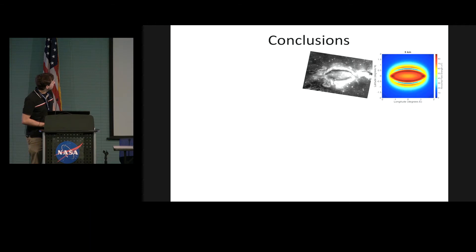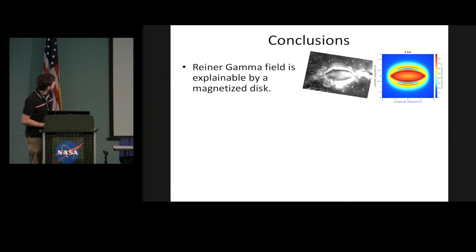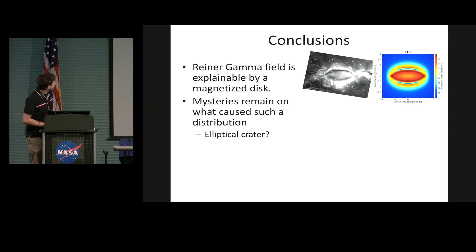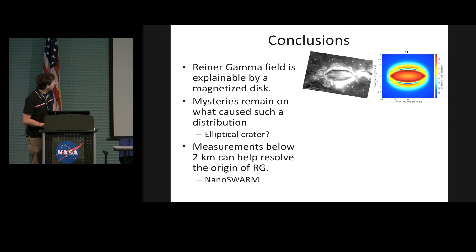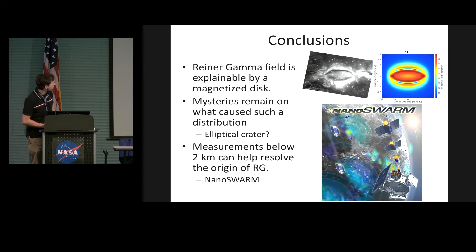Conclusions: here's an illustration of Reiner Gamma compared to the horizontal magnetic fields. The Reiner Gamma field is explainable by a magnetized disk and is consistent with the albedo patterns. Mysteries remain about what caused such a distribution. An elliptical crater is the first thing that comes to mind when you see an elliptical disk shape, and measurements below two kilometers could help resolve the origin of this feature. I'll also advertise the Nanoswarm mission concept we're working on, which makes measurements at very low altitudes at a variety of lunar swirls.